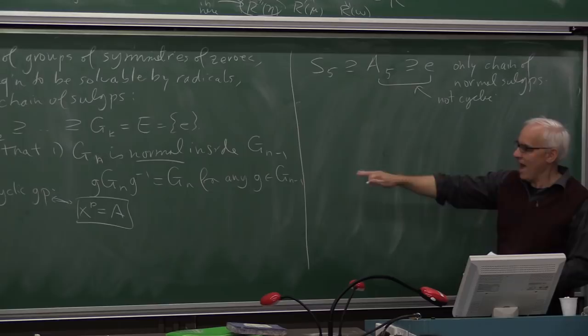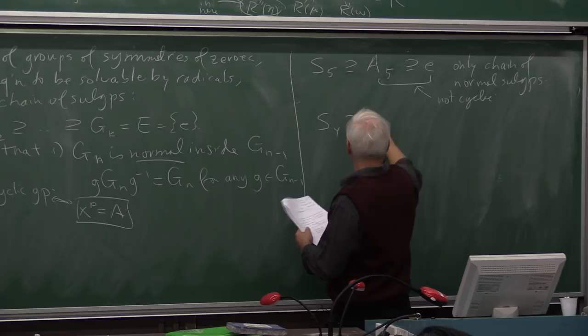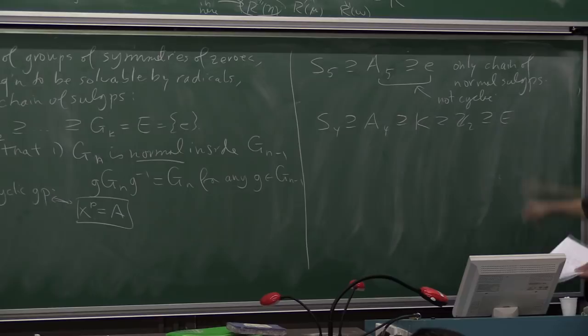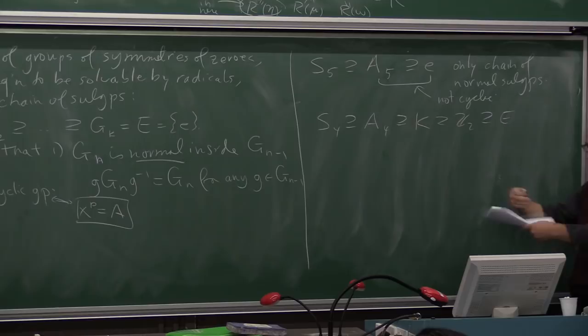But the point is that he could reduce the question of whether a given equation is solvable by radicals to a question about the group of symmetries of that equation and various subgroups and so-called composition series. And using this he was able to explain why the five degree equation doesn't have solutions while the previous ones did. So if you take S5, group of symmetries, inside it it has alternating group A5, but this is the only chain of normal subgroups and this one is not cyclic.